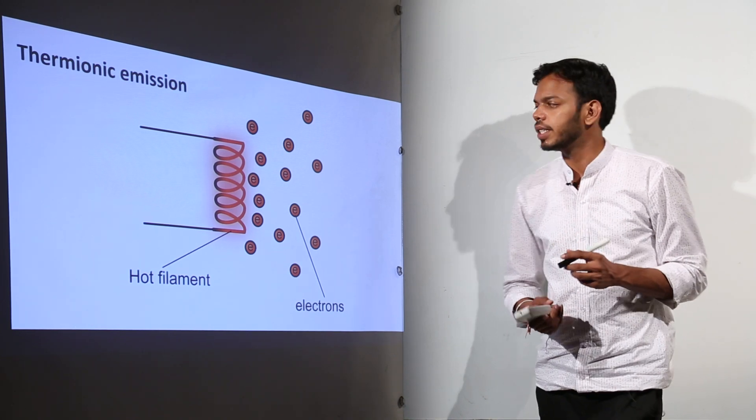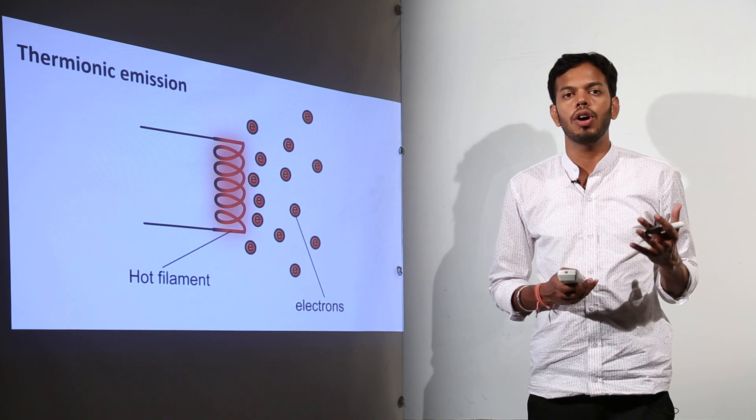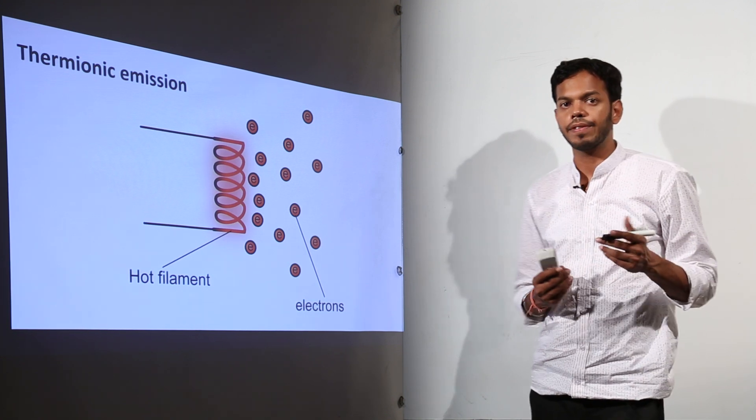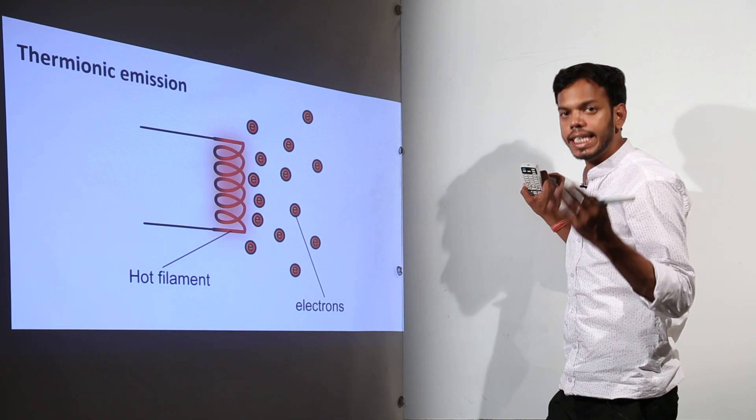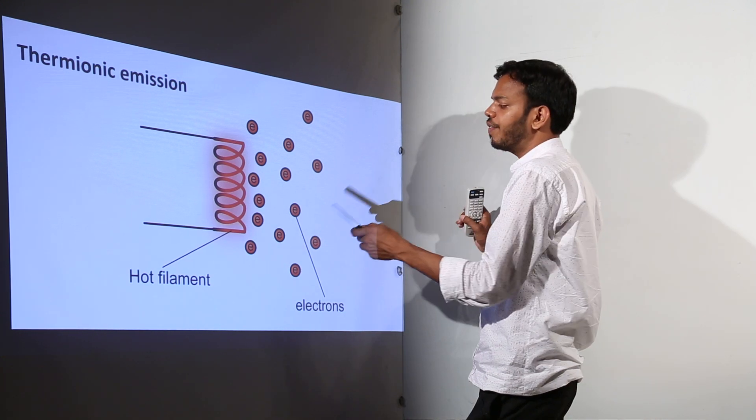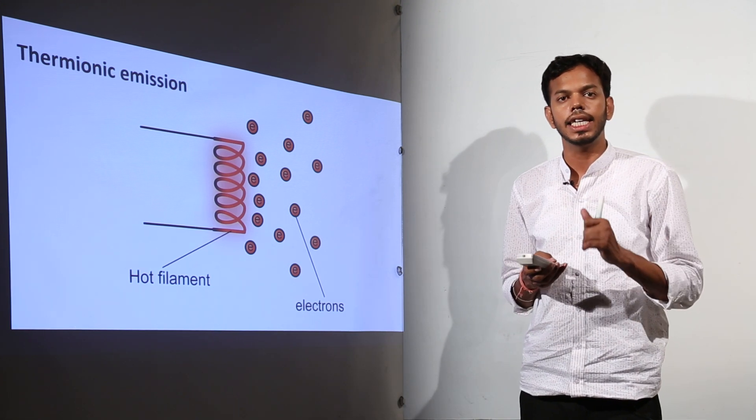Now, let's move on to thermionic emission. As the name suggests and I've already explained, this is the phenomenon of emission of electrons from the metal surface by imparting heat energy. This hot filament is depicting that the electrons are ejecting out of it due to the heat energy.